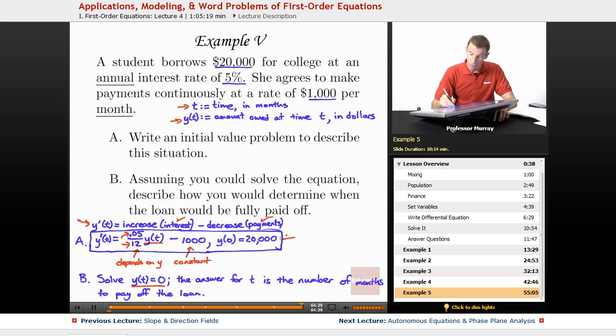The initial condition reflects how much she owes initially, which was $20,000. So we got our initial value problem. That would be a linear differential equation, so we could solve it using our techniques. But the question just asked how we would figure out when the loan would be paid off.